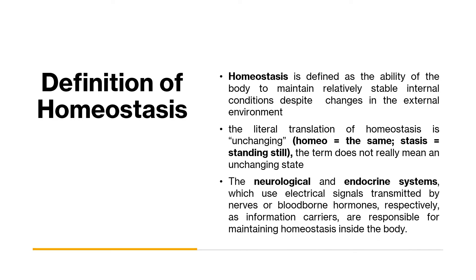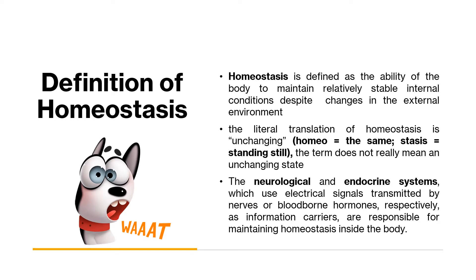Two systems which control homeostasis are the nervous system (or neurological system) and the endocrine system, which use electrical signals transmitted by nerves or blood-borne hormones respectively as information carriers, and are responsible for maintaining homeostasis inside the body.